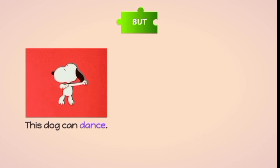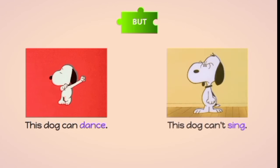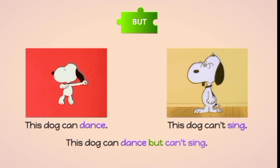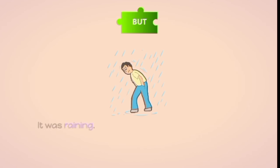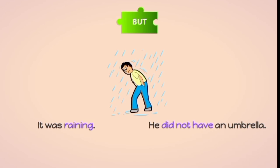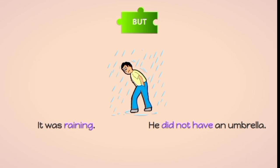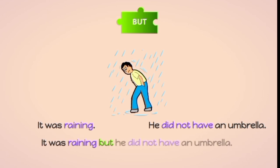This dog can dance. This dog can't sing. This dog can dance BUT can't sing. It was raining BUT he did not have an umbrella.